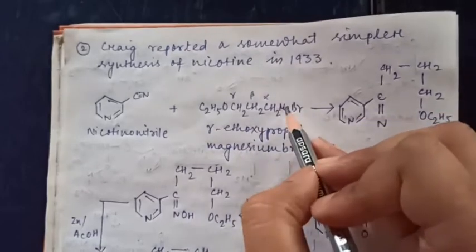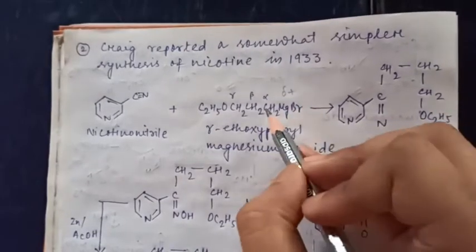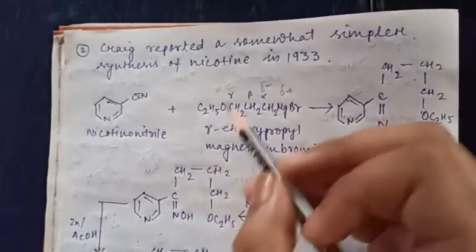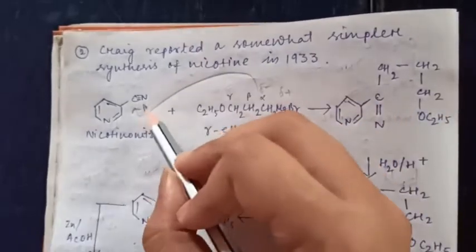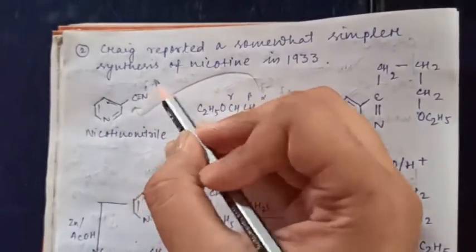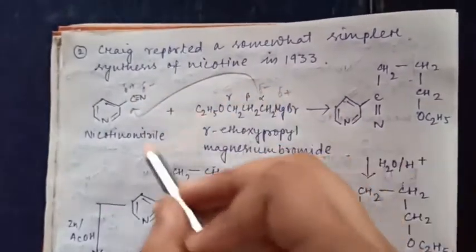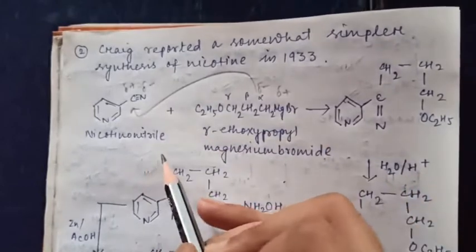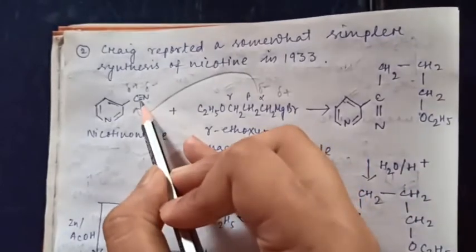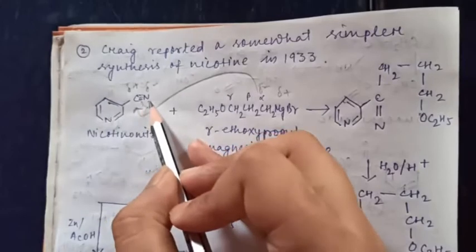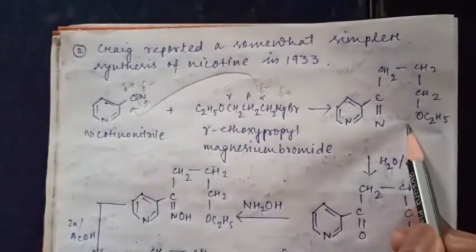Magnesium is obviously electropositive, so it carries a delta-plus charge. The carbon of the Grignard reagent carries a delta-minus and attacks the electrophilic carbon of the nitrile, because nitrogen is electronegative. This gives an addition product with a C=N bond and a CH2CH2 chain attached.